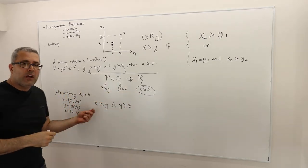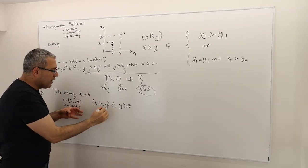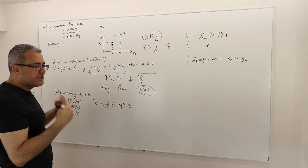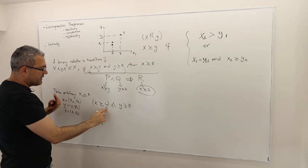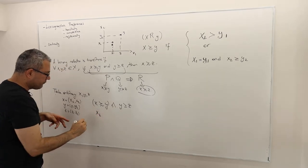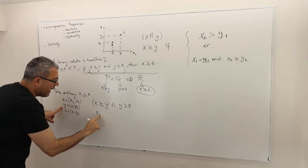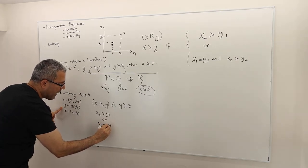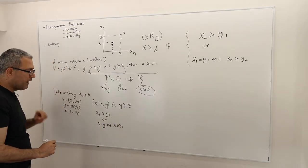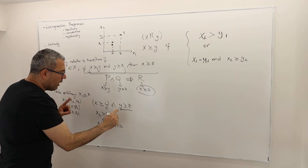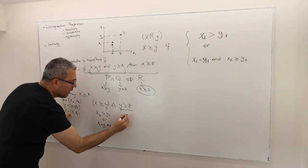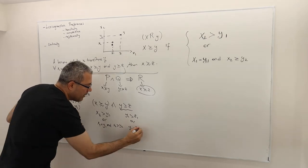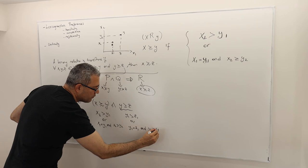Try to decompose your arguments using the definition. According to the definition of the lexicographic binary relation, x at least as good as y means: x1 is strictly greater than y1, OR x1 equals y1 AND x2 is greater than or equal to y2. Similarly, y at least as good as z means: y1 is strictly greater than z1, OR y1 equals z1 AND y2 is greater than or equal to z2.